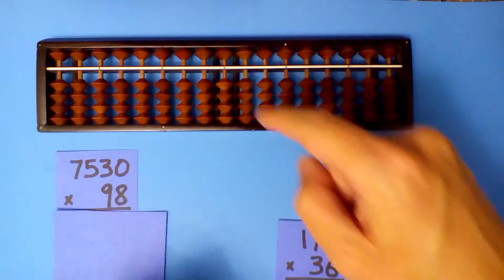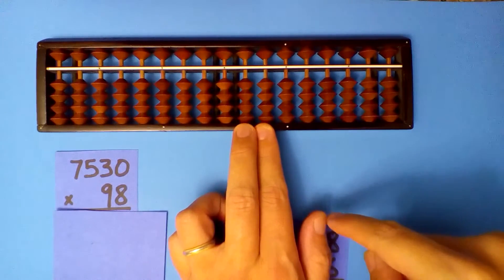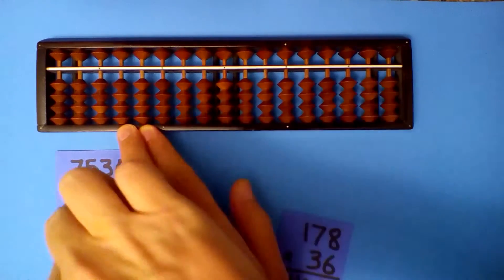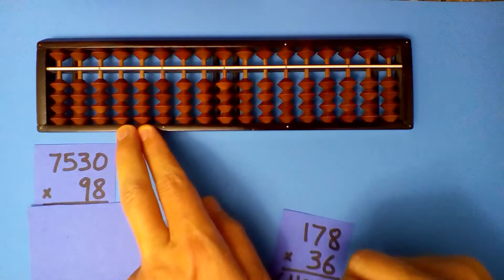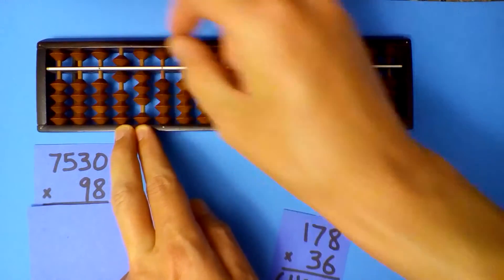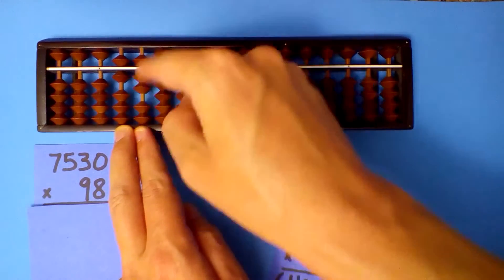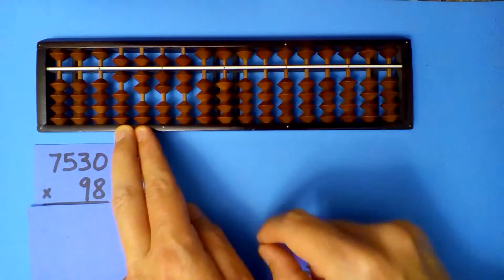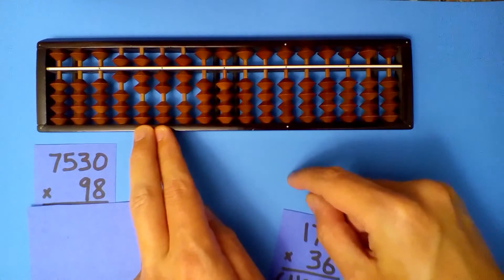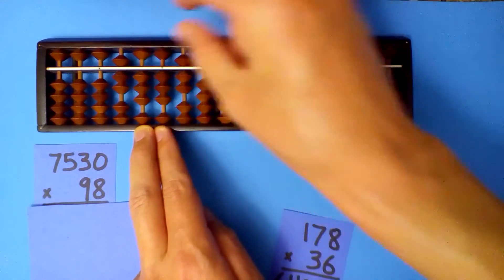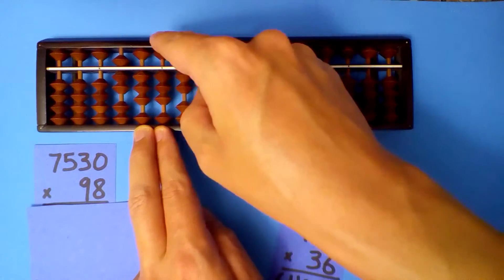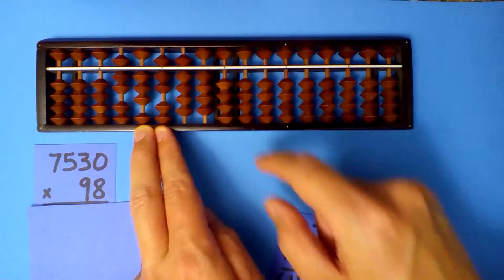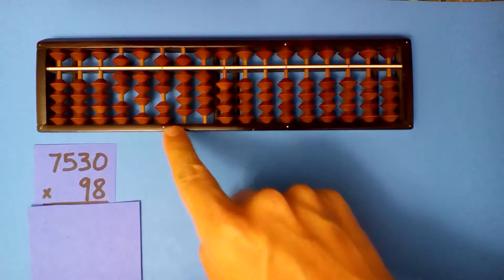7,530 times 98. 6 digits over: 1, 2, 3, 4, 5, 6. 9 times 7 is 63, 9 times 5 is 45, 9 times 3 is 27. Next, the 8: 8 times 7 is 56, 8 times 5 is 40, 8 times 3 is 24. Answer: 737,940.